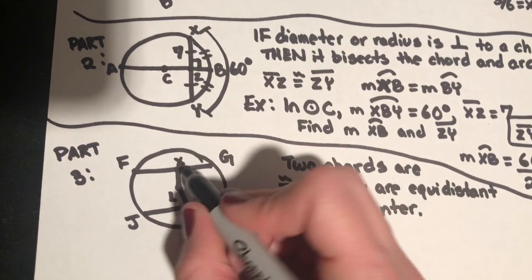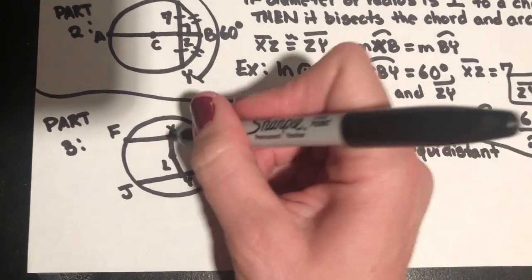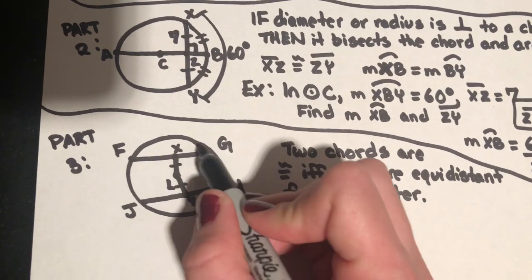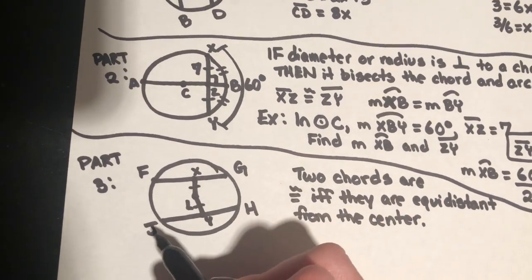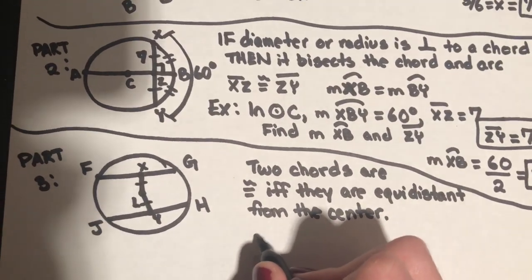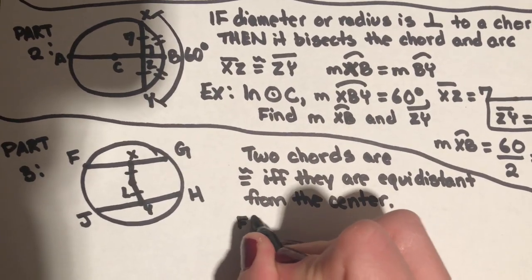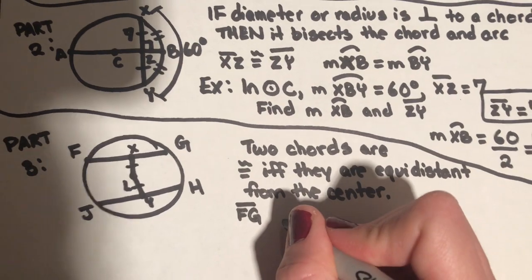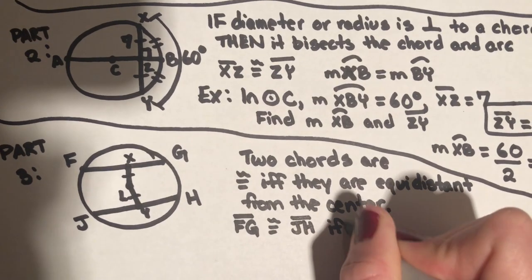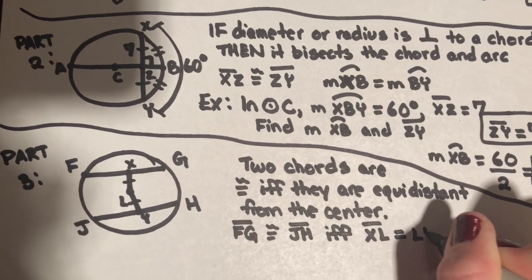That point is X and this point is Y. The theorem states: if LX is congruent to LY, then chord FG is congruent to chord JH. In other words, chord FG is congruent to chord JH if and only if XL is equal to LY.